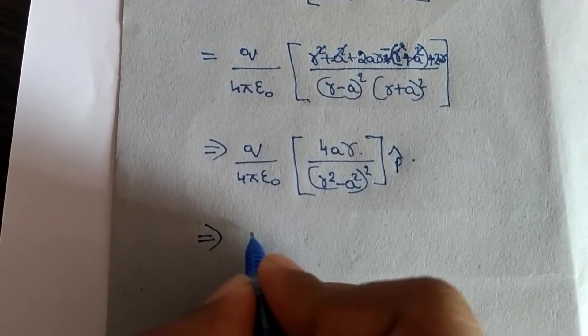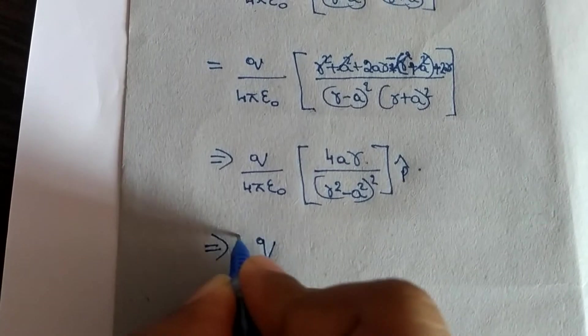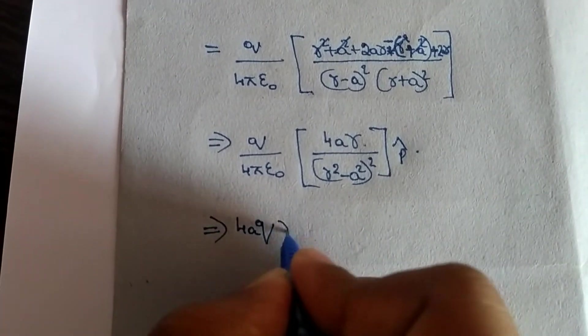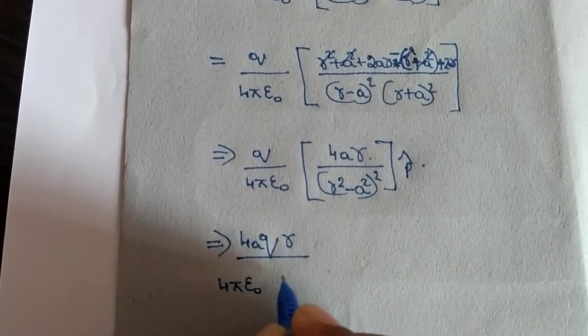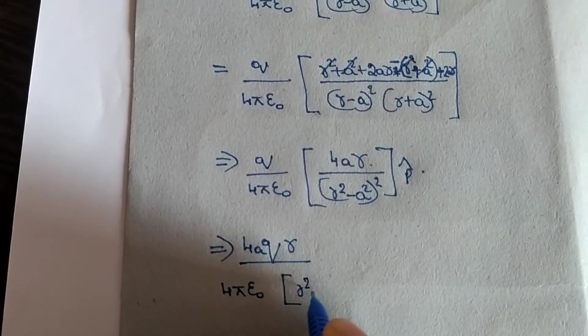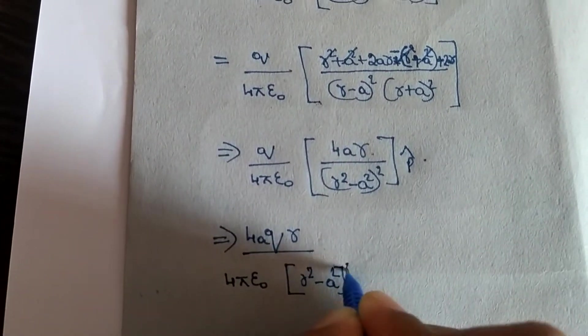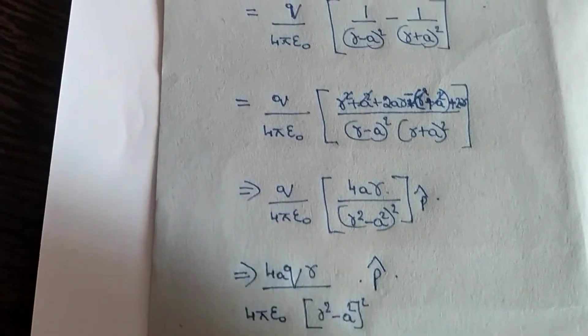Now finally we arrived at this equation, which is 1 by 4 pi epsilon 0, 2ar divided by r square minus a square whole square into p cap.